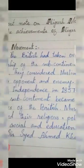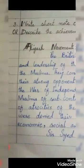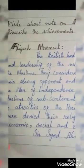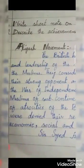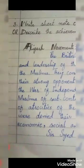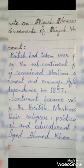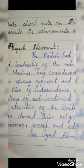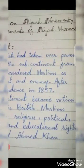The British had taken over power and leadership of the subcontinent from the Muslims. They considered Muslims as their strong opponent and enemy. After the war of independence in 1857, Muslims of the subcontinent became victims of atrocities of the British. Muslims were denied their religious, political, economic, social, and educational rights.